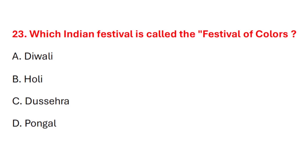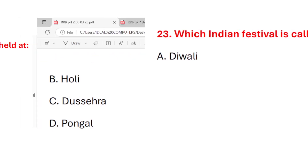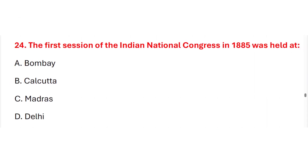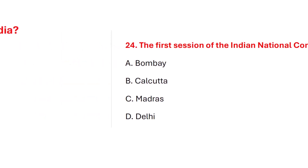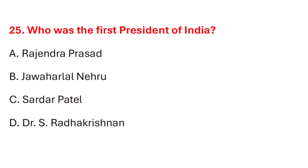Question 23. Which Indian festival is called the festival of colours? Correct answer is option B: Holi. Question 24. The first session of the Indian National Congress in 1885 was held at? Correct answer is option A: Bombay. Question 25. Who was the first president of India? Correct answer is option A: Rajendra Prasad.